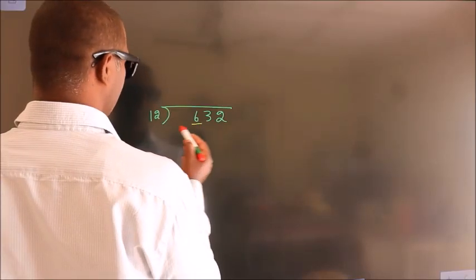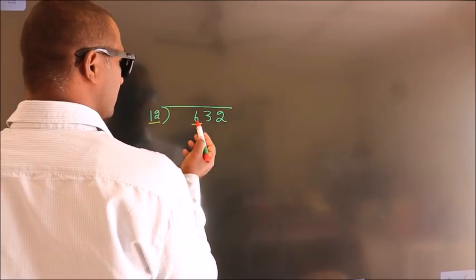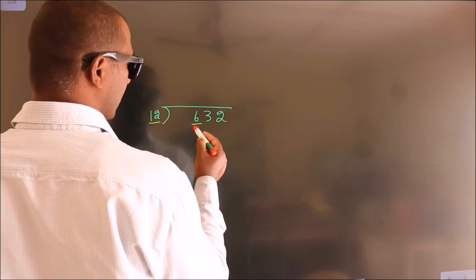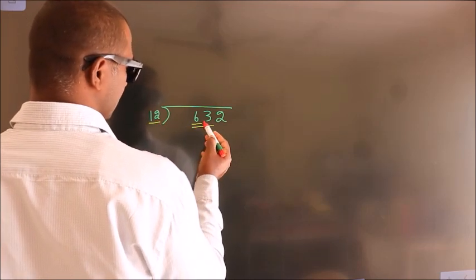Here we have 6, here 12. 6 smaller than 12. So we should take two numbers, 63.